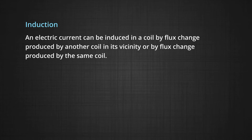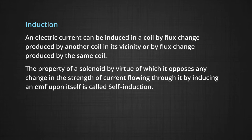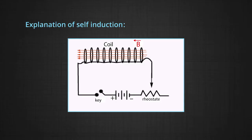Let us now discuss the concept of induction. An electric current can be induced in a coil by flux change produced by another coil in its vicinity or by the flux change produced by the same coil. The property of a solenoid by virtue of which it opposes any change in the strength of the current flowing through it by inducing an EMF upon itself is called self-induction. As soon as the key in the circuit is pressed, the current through the coil increases. This changes the flux linked with the coil and the coil induces an EMF upon itself so as to oppose this change in the flux. This EMF will be induced in such a direction that it will try to decrease the current flowing through it.